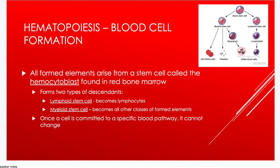All blood cells originate from a stem cell in the red bone marrow called a hemocytoblast. It divides into either a lymphoid stem cell (which becomes lymphocytes) or a myeloid stem cell (which becomes all other formed elements). Once committed to a lineage, the stem cell cannot switch — a myeloid stem cell becoming a red blood cell cannot switch to becoming a platelet.